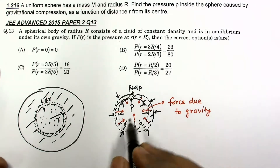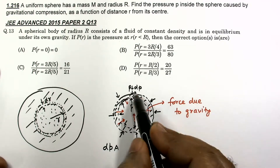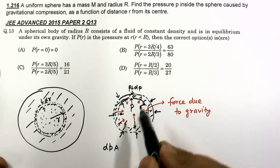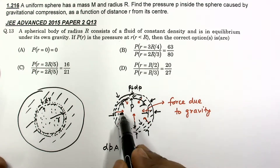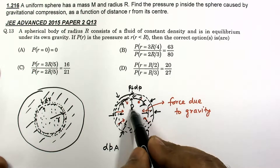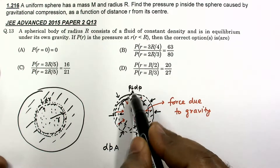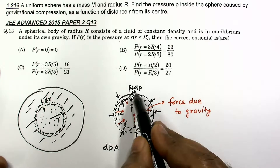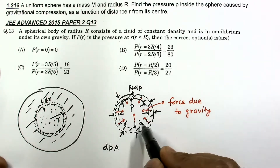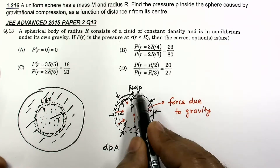The force due to pressure difference is dp times area A. Looking at the diagram, the gravitational force is inwards. Since both forces cannot be inwards simultaneously, pressure must decrease as we go outward. So at radius r pressure is p, and at r plus dr the pressure is p plus dp, where dp is negative, confirming pressure decreases with increasing r.